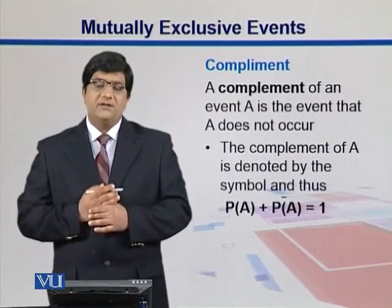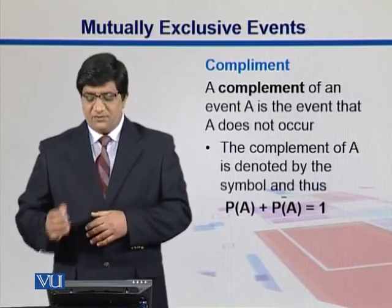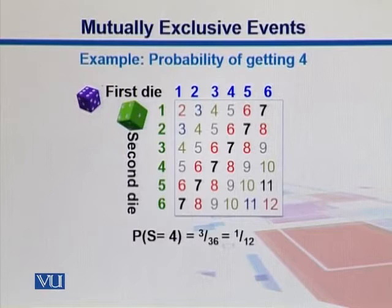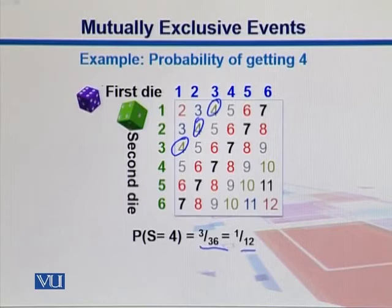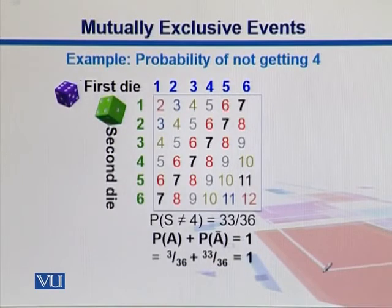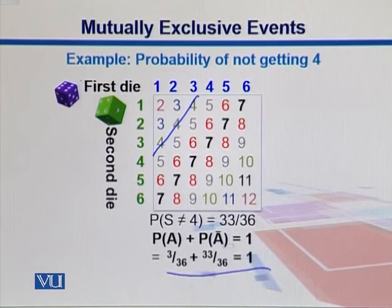We believe that P(A) plus P(A complement) equals 1. Using the previous example of rolling two dice, what is the probability of getting a sum of 4? We find there are three possible ways to get 4, so the probability is 3 out of 36, which is 1 out of 12. What is the probability of not getting 4? We take those 3 out and the remaining 33 outcomes give a probability of not seeing 4 of 33 out of 36. When we add both together, they sum to 1.